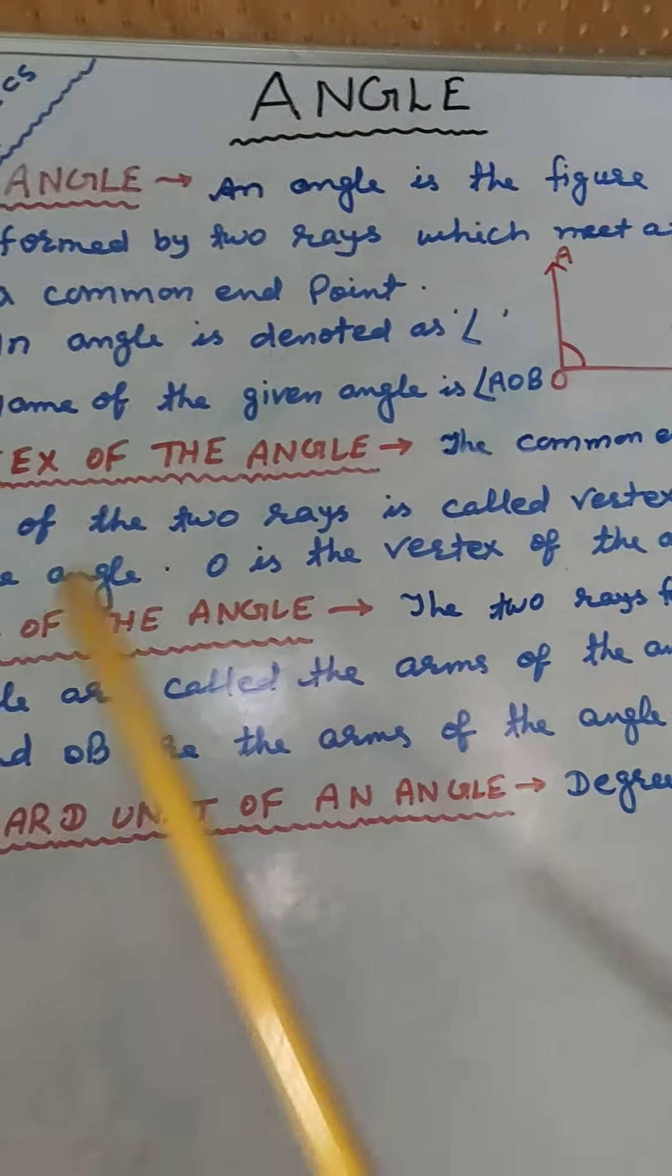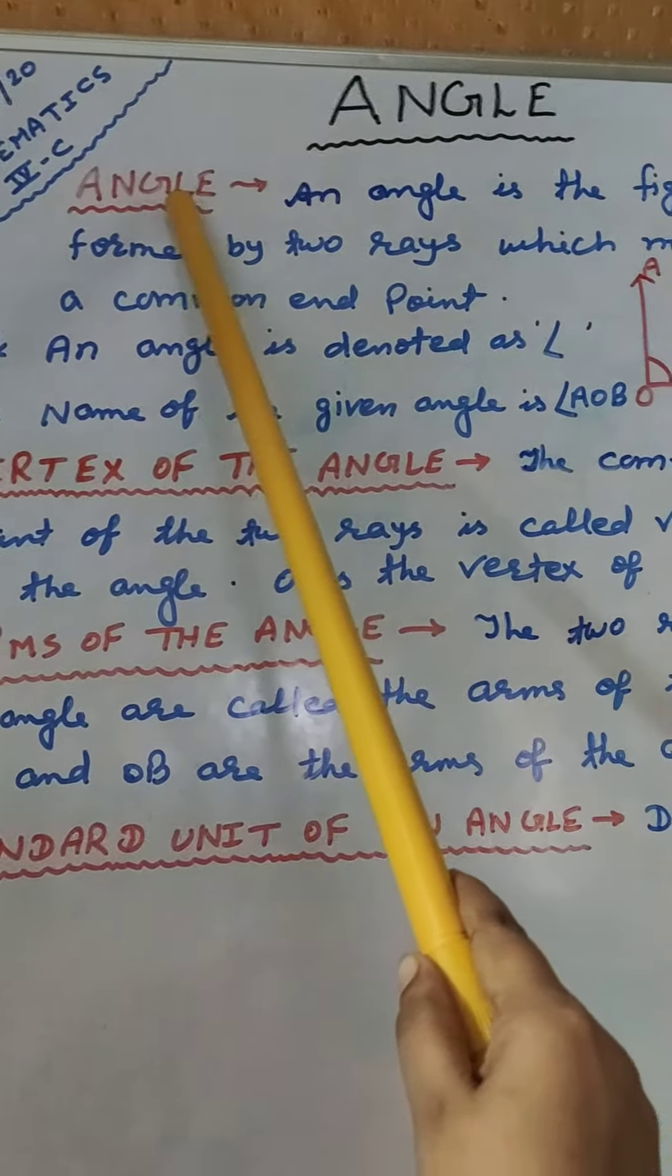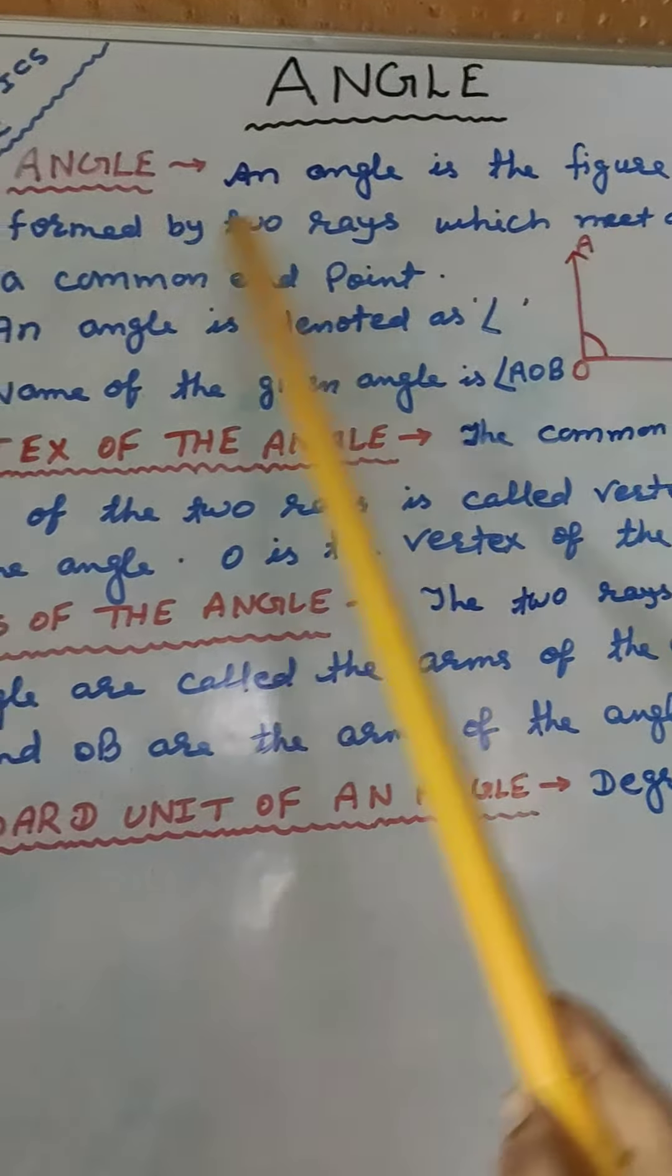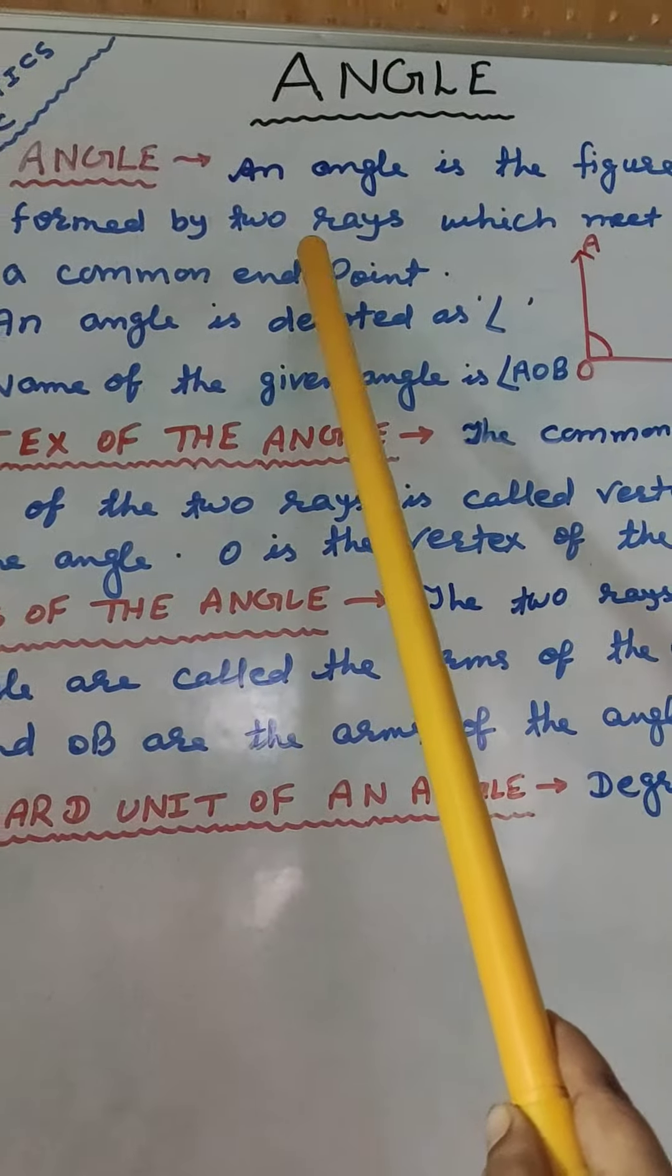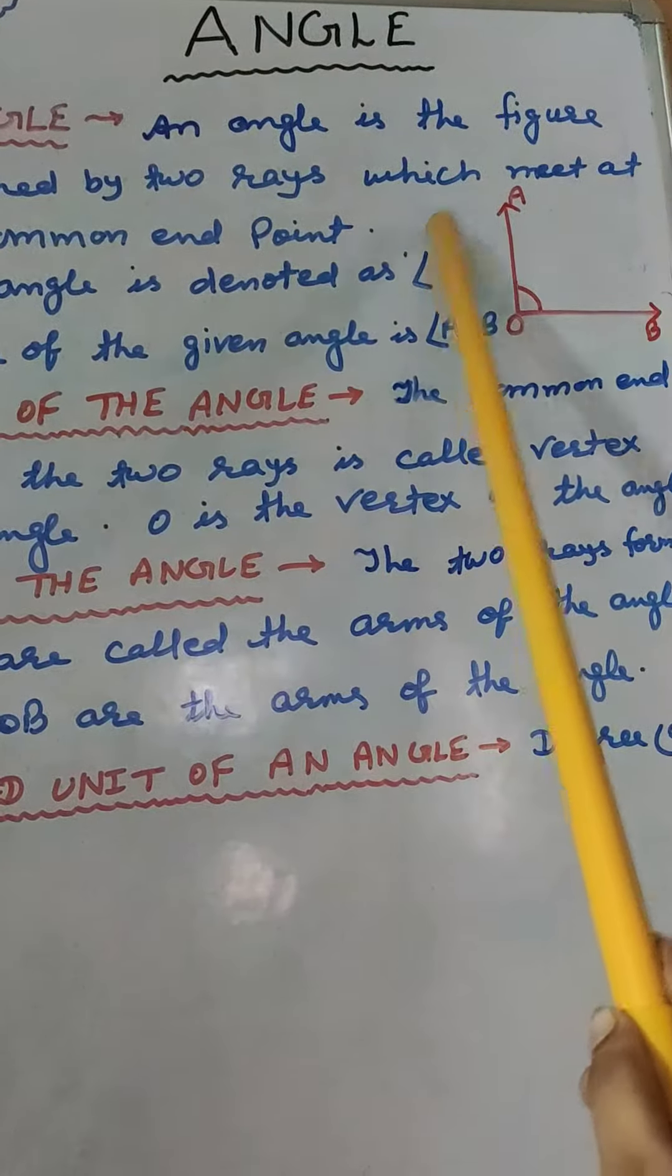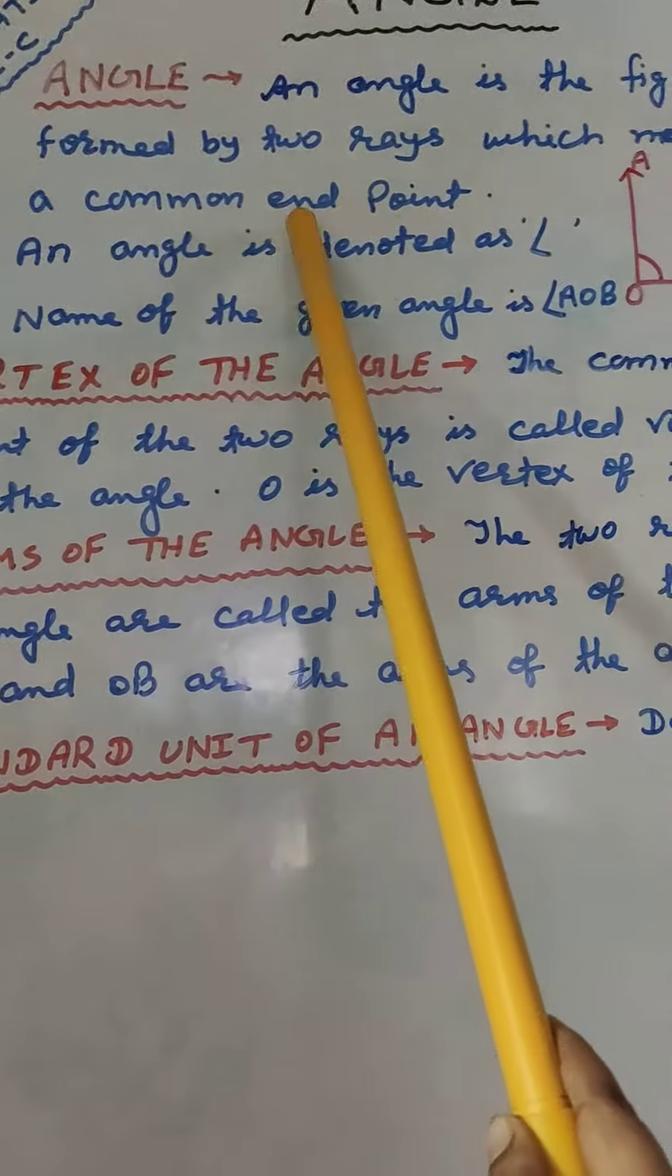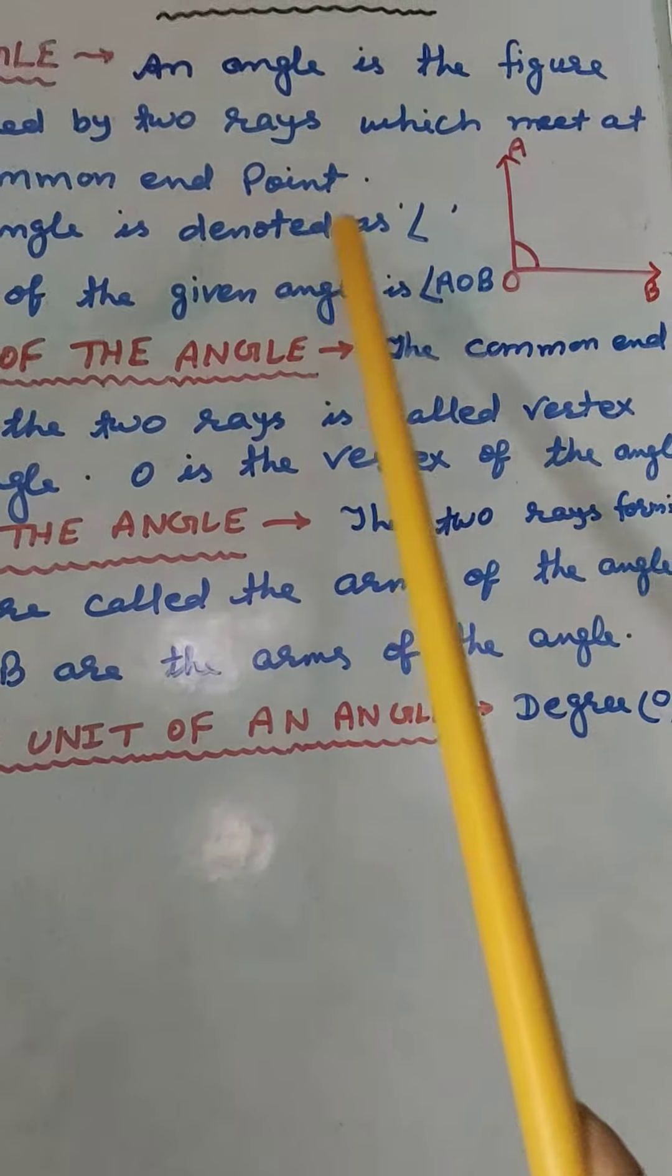Now we will know about angle. An angle is the figure formed by two rays which meet at a common end point. Look here children.